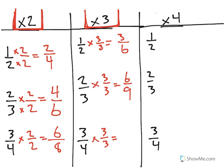So, as I continue these, you'll see I'm now multiplying both numerator and denominator by 3. 1 half is equal to 3 sixths. 2 thirds is equivalent to 6 ninths. And 3 fourths is equivalent to 9 twelfths.